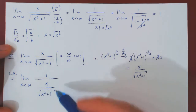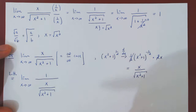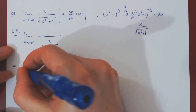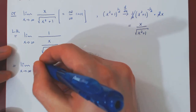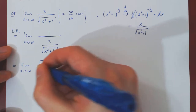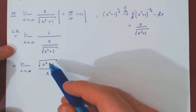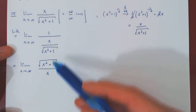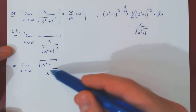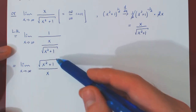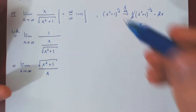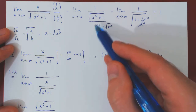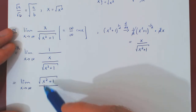We can simplify: we have one over a fraction, so we look at the reciprocal, giving us the root of x squared plus one over x. Interestingly, after one application of L'Hôpital's rule, we got the exact same expression but as the reciprocal — x ended up on the denominator and the root of x squared plus one on the numerator. At this point we could work it out: replacing x by the root of x squared, we'd get the root of x squared plus one over x squared equal to one, and the limit would simply be one.